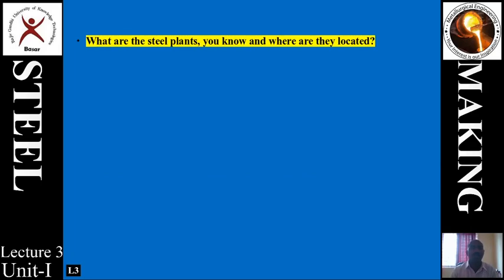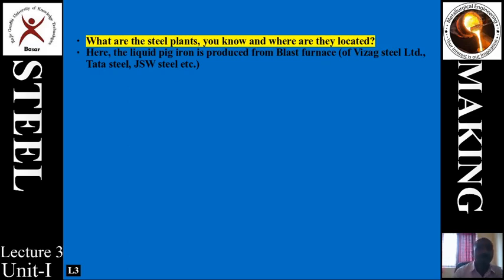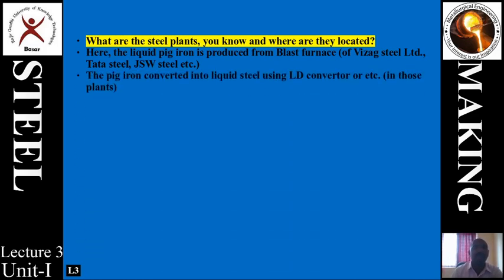Welcome to the steel making course. In India, let us see a few plants and understand what happens inside these steel making plants — how liquid pig iron is produced from the blast furnace in plants such as Vizag Steel Plant, Tata Steel Plant, and Jindal Steel Works, and how this pig iron is converted into liquid steel using an LD converter in the same plants.